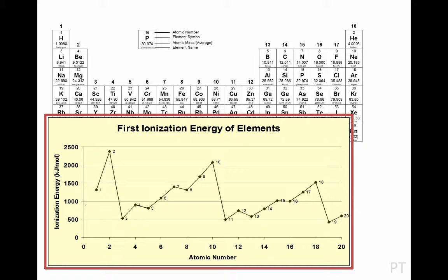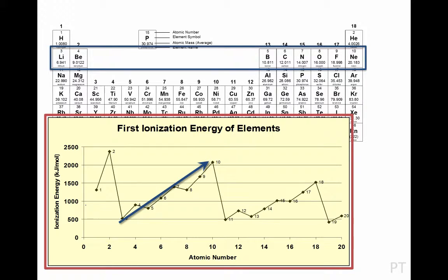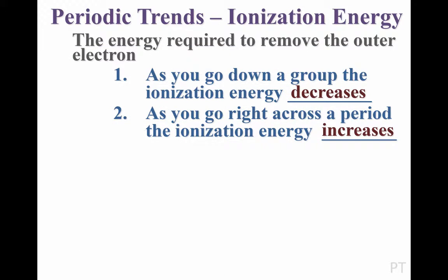I'm going to focus my attention on the period 2 elements. Notice that elements 3 through 10 — that's lithium up to neon — they do show a general pattern. As you go across the period, the ionization energy increases, though not continuously. There are a couple of places along this line where the trend reverses. But generally speaking, we could say that the ionization energy increases as you go left to right across the periodic table.